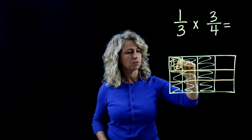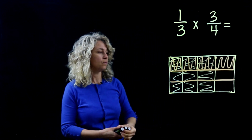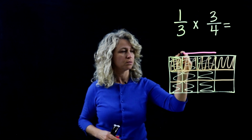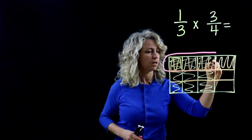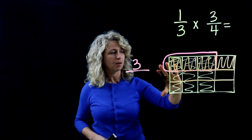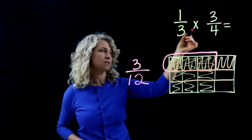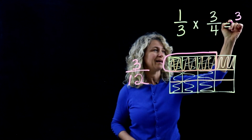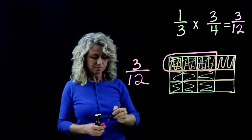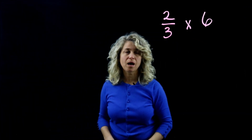Now for the first number, one-third: separate the rectangle into thirds — one, two, three equal parts — and shade in only one of the thirds. Circle the part overlapped by both colors: one, two, three squares overlapped. Total squares: twelve. So the answer is three-twelfths, which is one times three over three times four.